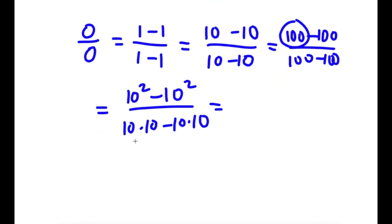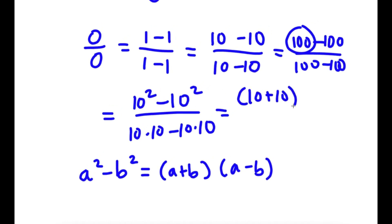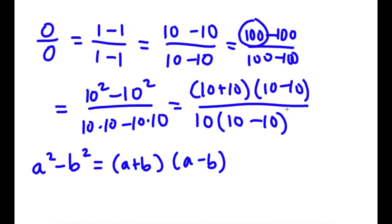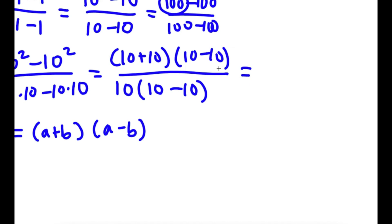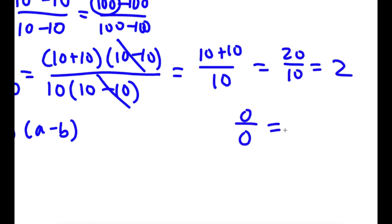Using the difference of squares: a squared minus b squared equals (a plus b)(a minus b). So 10 squared minus 10 squared equals (10 plus 10)(10 minus 10). For the denominator, I factor out 10 to get 10 times (10 minus 10). Now I can cancel the (10 minus 10) factors, leaving 10 plus 10 over 10, which is 20 over 10, equal to 2. So I've just proved 0 over 0 equals 2.